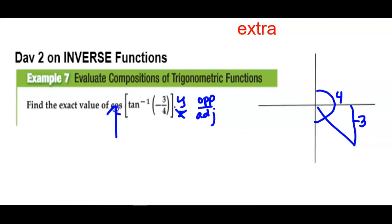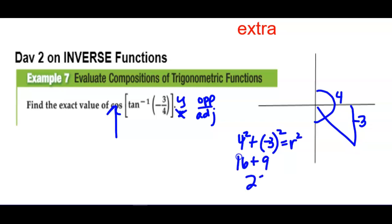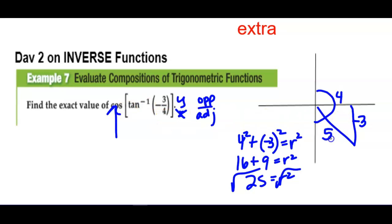They want the cosine. The cosine there is 4 over some hypotenuse, so we need to do the Pythagorean theorem. This is a Pythagorean triple, some of you will recognize. 16 plus 9 is 25, square root that and we get 5 for the hypotenuse. Then it asked for the cosine, so the cosine would be adjacent over hypotenuse, or x over r, which is 4 fifths.